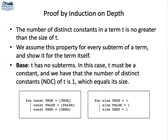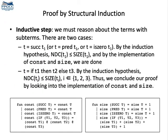For the base case, we have three cases to consider. In all of them, the set of constants is a singleton and the size of the term is exactly one. So, the theorem is true for the base case. Now, we must reason about terms formed by subterms. There are four such terms: succ, pred, iszero, and the if-then-else. Let's just check one of them. The others follow similar reasoning.